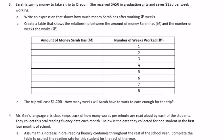Number three: Sarah is saving money to take a trip to Oregon. She received $450 in graduation gifts and saves $120 per week working. Write an expression that shows how much money Sarah has after working W weeks. She just gets that $450 once — it would be nice if people gifted you $450 every week, but highly unlikely. Then she saves $120 per week working, so every week she works she gets $120. That's where we bring in W: $120 times however many weeks she works, plus the $450 one-time payment. So our expression is 120W plus $450 — you can flip it around and say $450 plus $120W; the commutative property works here.